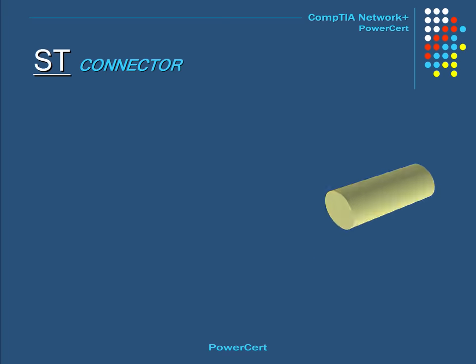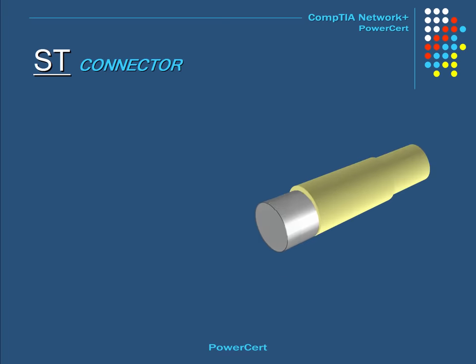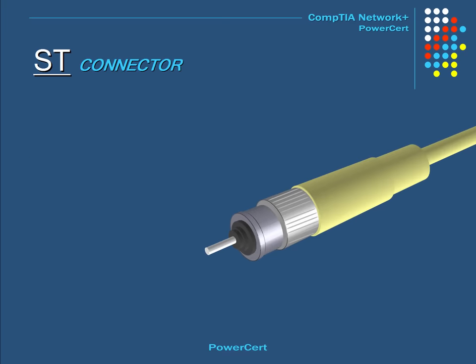The next fiber optic connector is called the ST, or Straight Tip. This uses a half-twist bayonet type of lock and is commonly used with single-mode fiber optic cable.